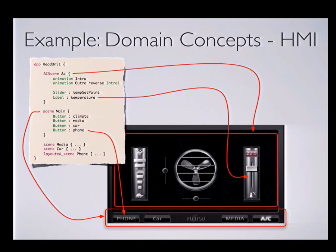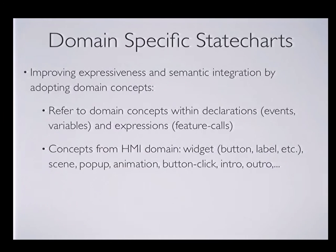I'll give an example from the domain of human-machine interface modeling. HMI deals with concepts like scenes, or widget types like buttons, sliders, and labels. These widgets have intrinsic features — a scene can be started or stopped, a button can be pressed, a slider can have different values. What we really want is to enhance our state charts so we can directly deal with these domain-specific concepts, referring to them in event declarations or action code on transitions.